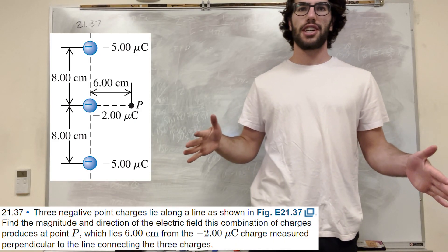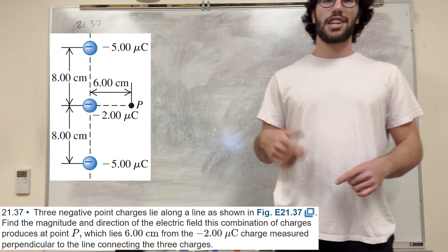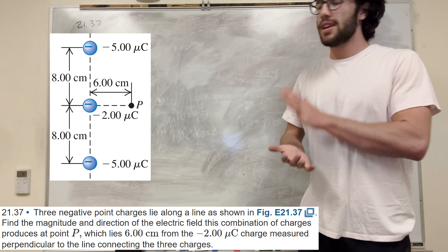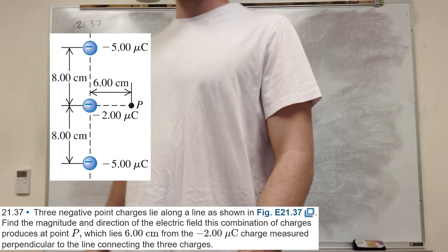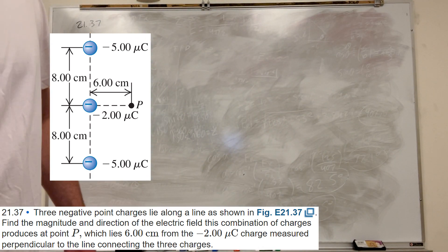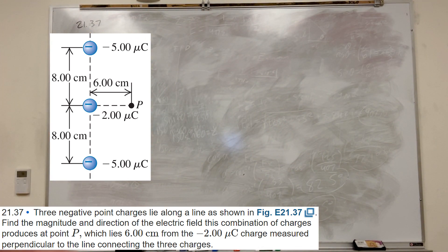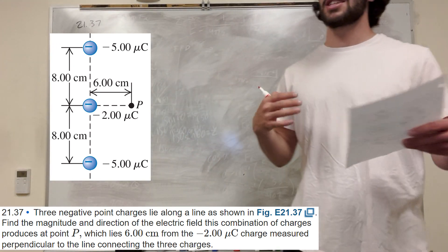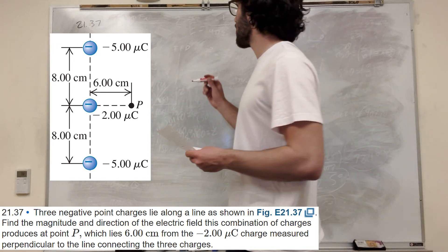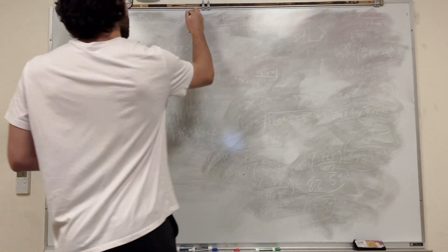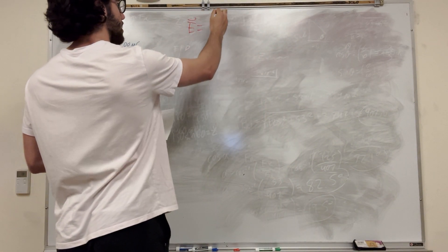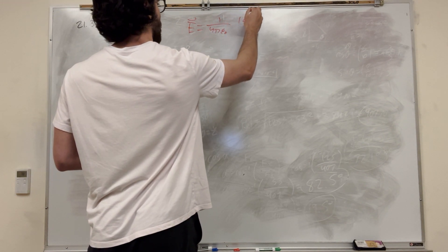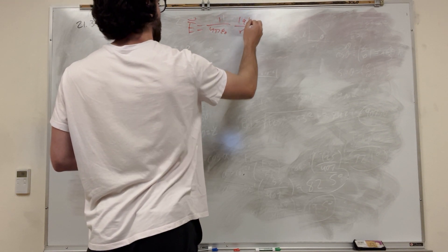What's up Cal gang? So we got this question here. We're trying to find the magnitude and direction of the electric field due to these three charges on point P. When you have a question like this, you want to break it up into parts. We've got three forces acting on it, so we're going to find the force from each one of them that acts on P, and then we're going to take the sum of them all. Our equation is that the electric field is equal to 1 over 4πε₀ times the charge over the distance squared.